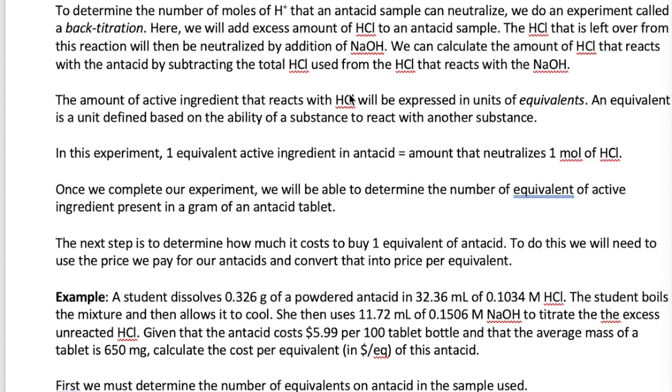So once we finish our experiment, what we can find out is how many equivalents of the active ingredient is present in a gram of antacid tablet. After we find that number, we can then figure out how much it costs us to buy a certain equivalent of active ingredient. We're going to use the cost information of the antacid to calculate that.